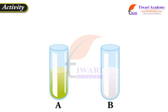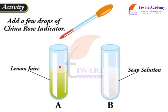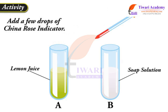Take two test tubes and mark them A and B. Add lemon juice in test tube A and soap solution in test tube B. Then add a few drops of China Rose indicator in both the test tubes.